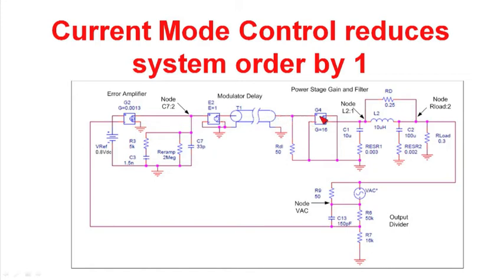We have a voltage control current source that represents the current mode control within our power supply which turns the output inductor into a current source. Then we also have our output filter capacitor resistor with some ESRs in the capacitors, and finally load resistance and the sampling network.